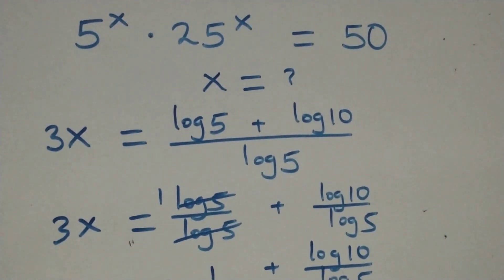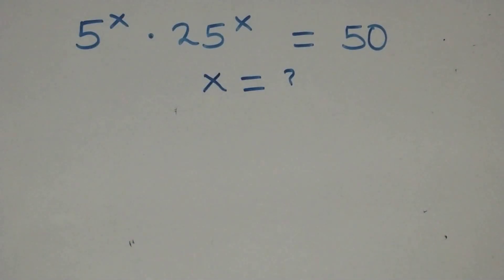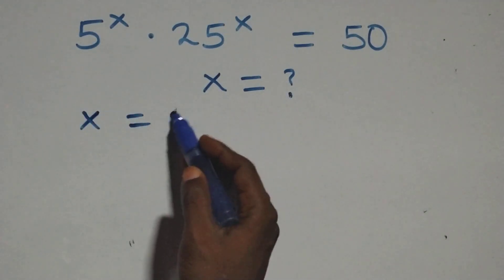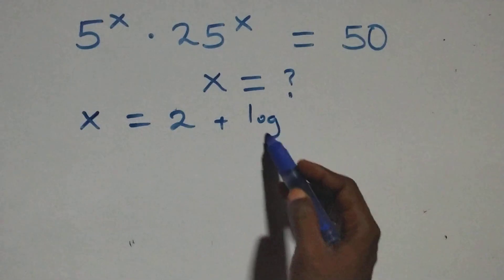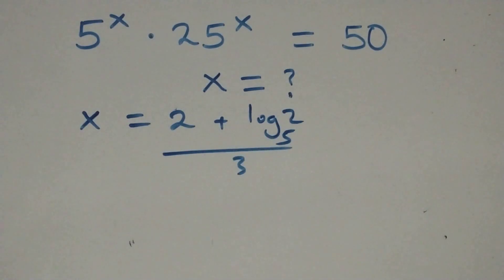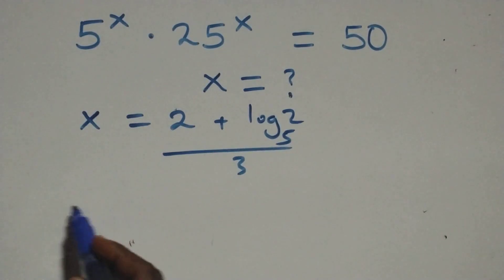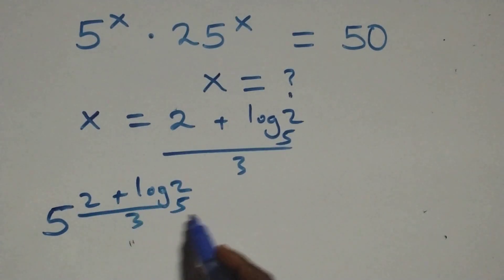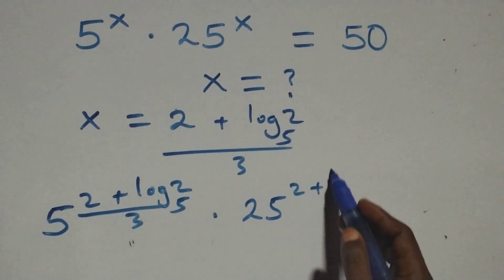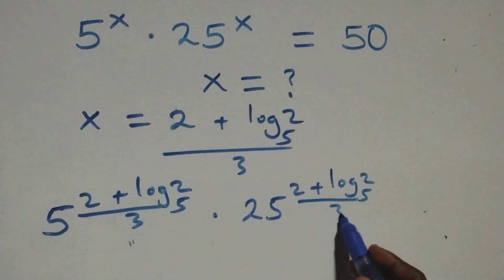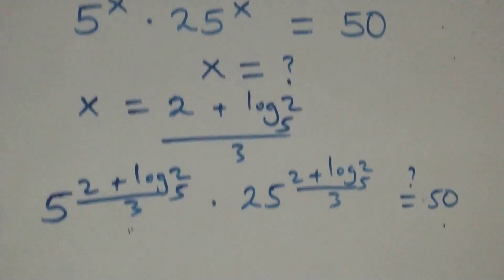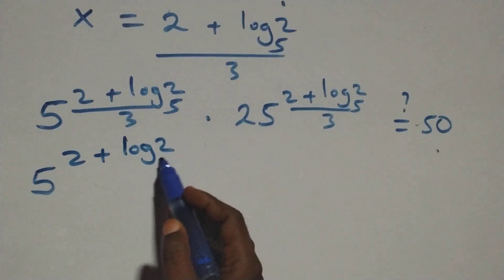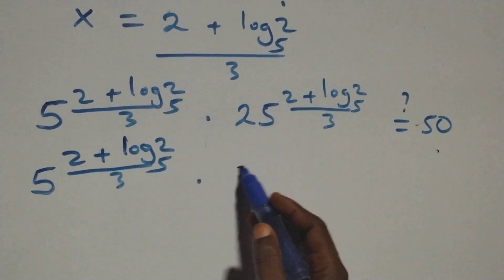Let's check whether this satisfies the given problem. We substitute the value x equals 2 plus log 2 base 5, all over 3, back into the original equation. We need to verify that 5 raised to the power of 2 plus log 2 base 5, all over 3, equals 50.